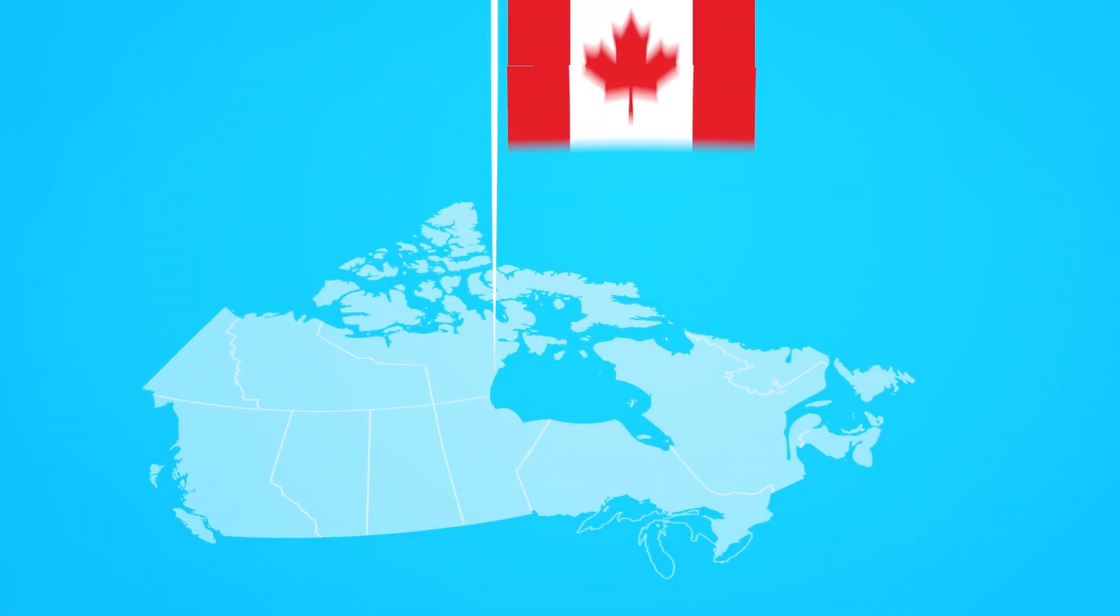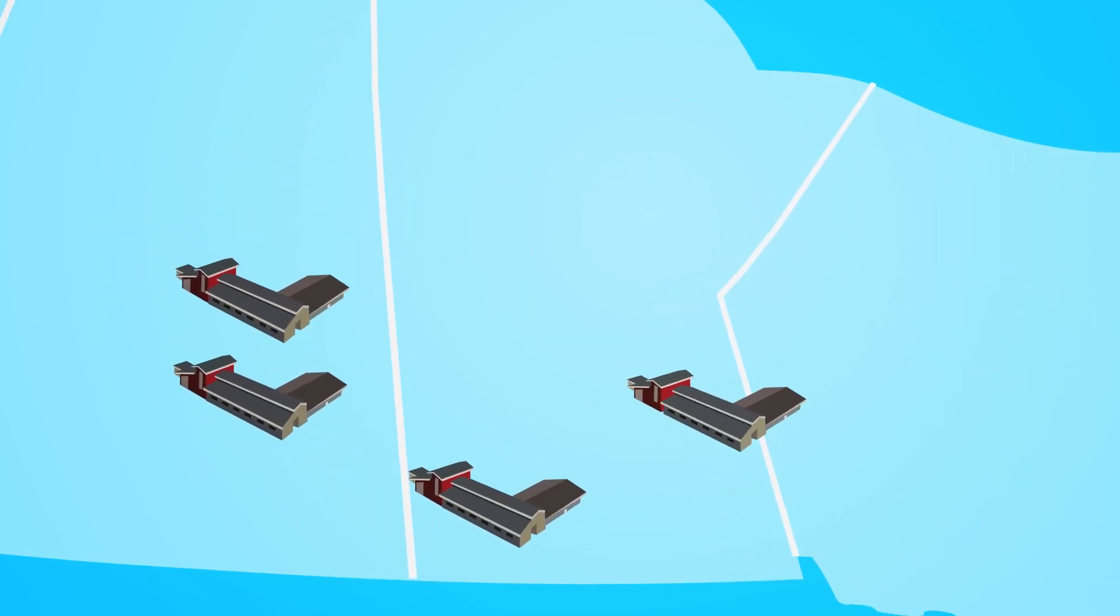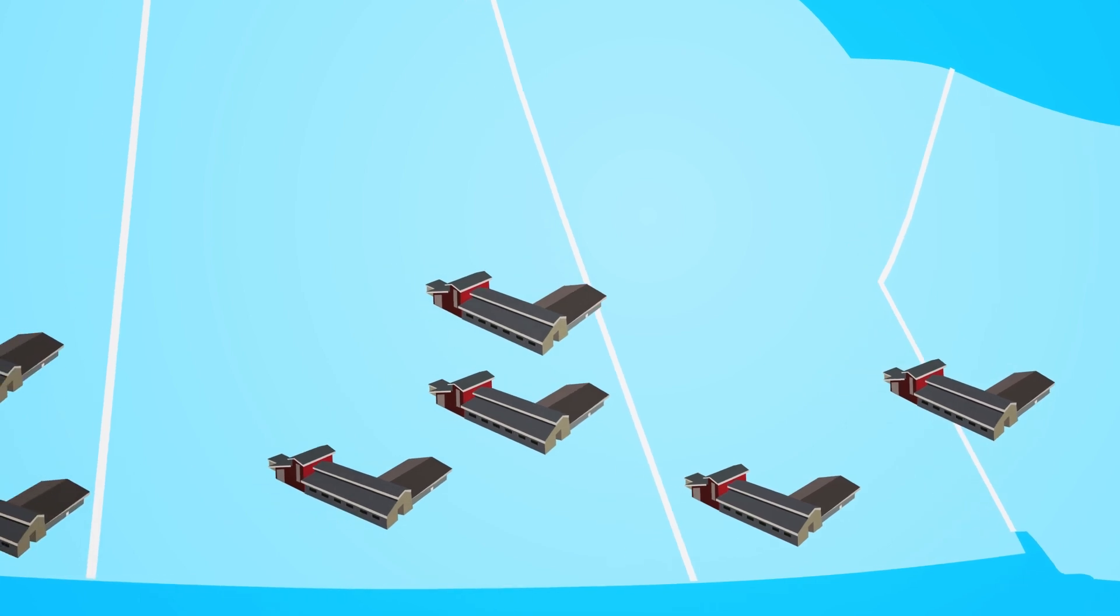Canola is 100% Canadian and was first bred on the prairies by scientists at the University of Manitoba and Ag Canada research stations in the late 1960s and early 1970s. The first variety was called Tower.